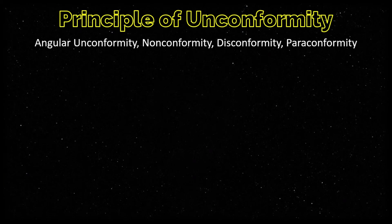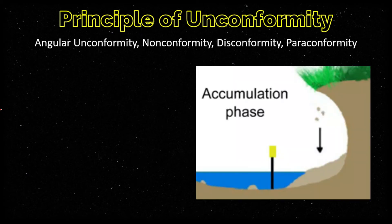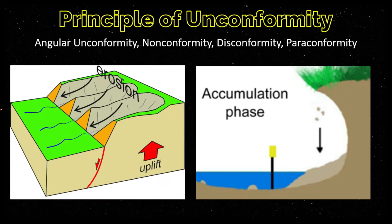Now let's have the principle of unconformity. We have four kinds: angular unconformity, nonconformity, disconformity, and paraconformity. An unconformity is a surface of non-deposition or erosion. Accumulation of sediments continues until the supply of sediments is cut off or if the area is subject to uplift and erosion. Uplift — meaning from the bottom of the ocean to the surface — exposes rocks to the agents of weathering and erosion, and when this happens, an unconformity can occur.